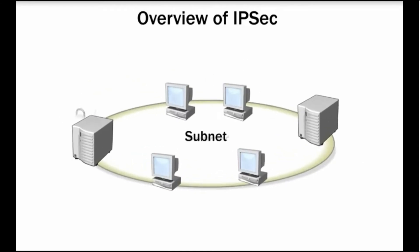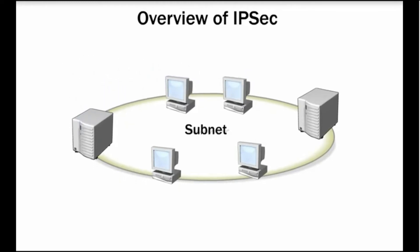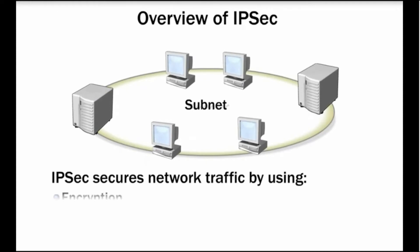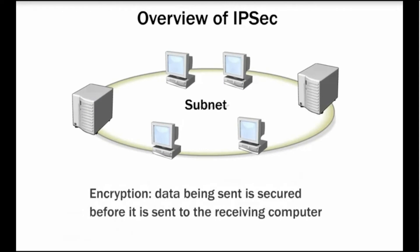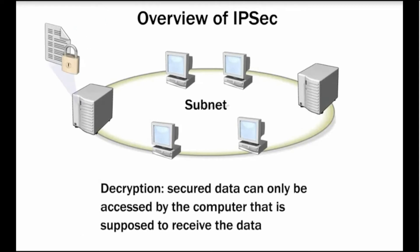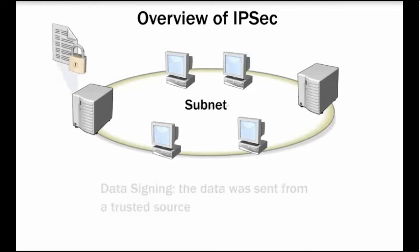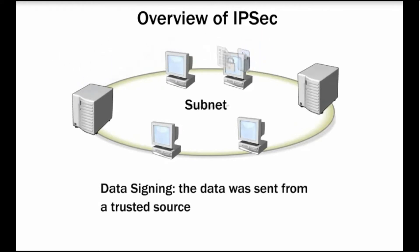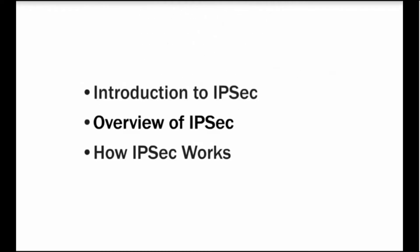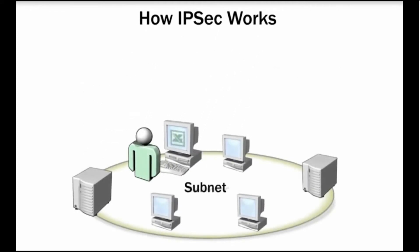Configuring IPSec on the sending and receiving computers enables the two computers to send secure data to each other. IPSec secures network traffic by using encryption, decryption, and data signing. Encrypting data using IPSec means the data being sent is secured before it's sent to the receiving computer. Decrypting data means the secure data can only be accessed by authorized computers receiving the data. Signed data means the data was sent from a trusted source.